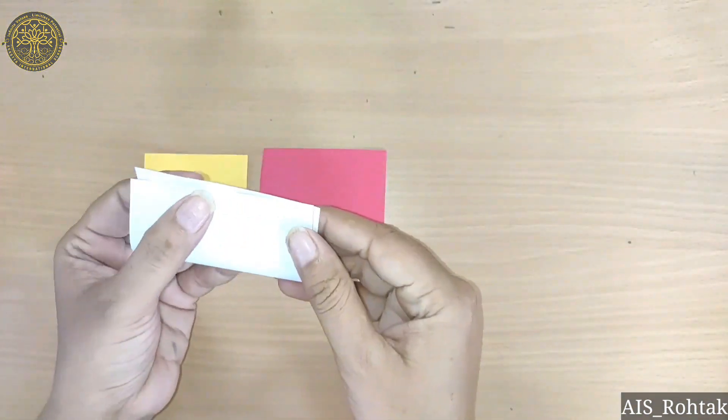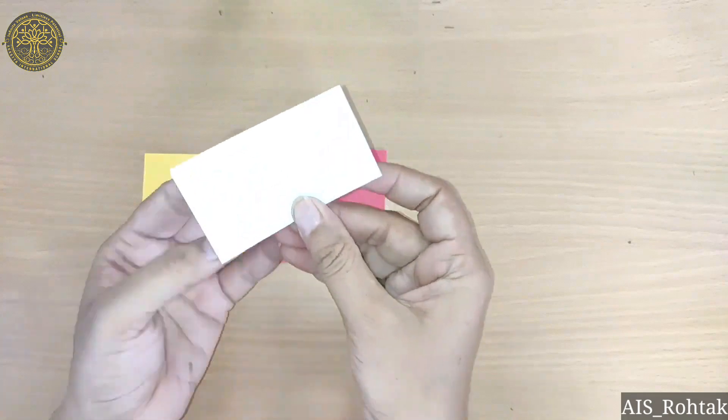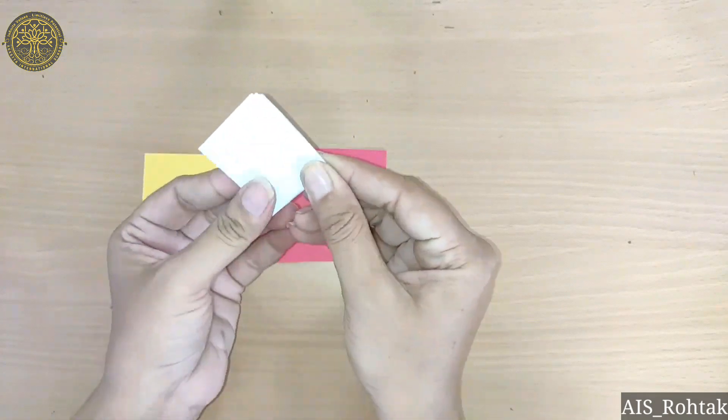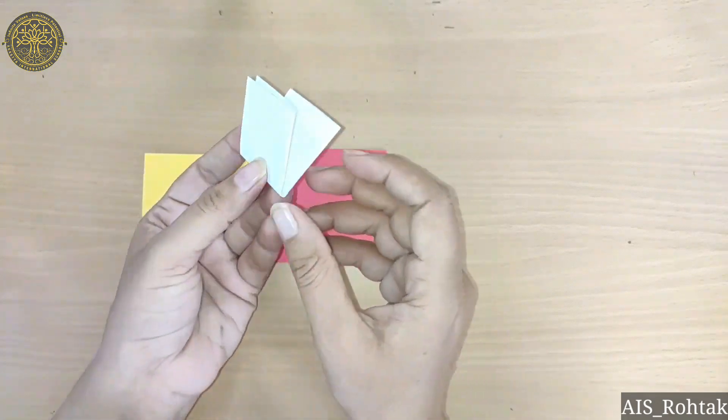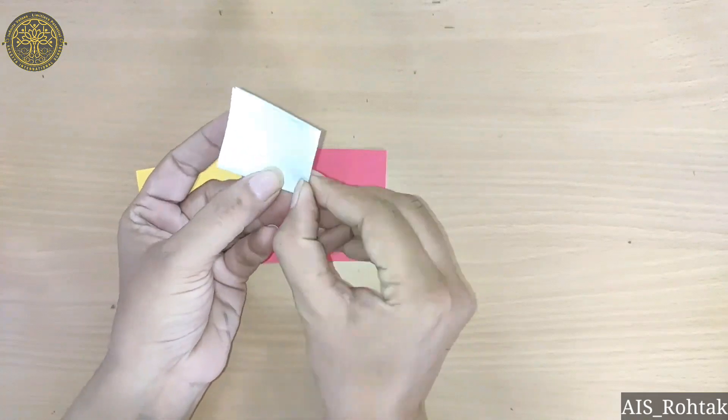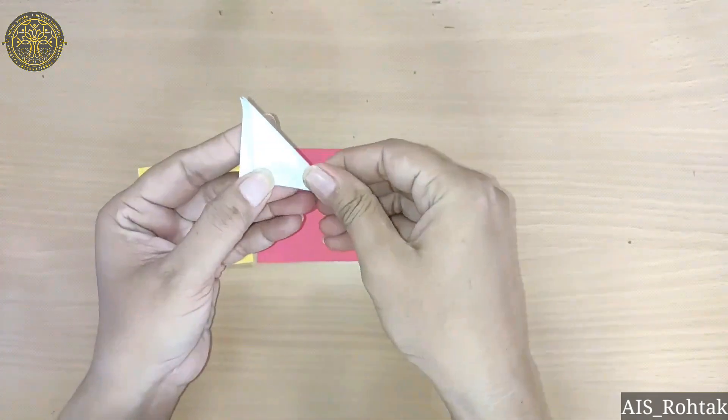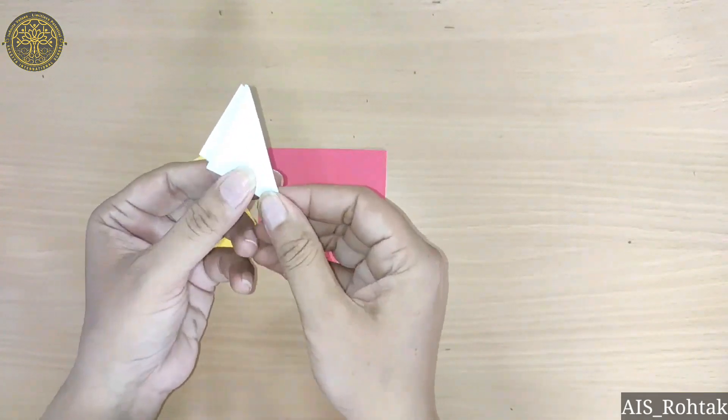So kids, firstly take one color sheet, fold into half, again fold into half, and then see three sides open and one side is closed. And the side is closed, we will fold it in a triangle shape.